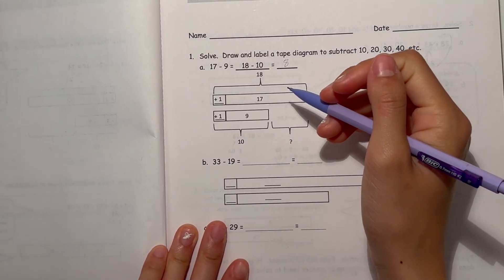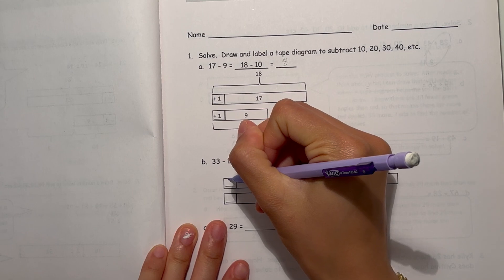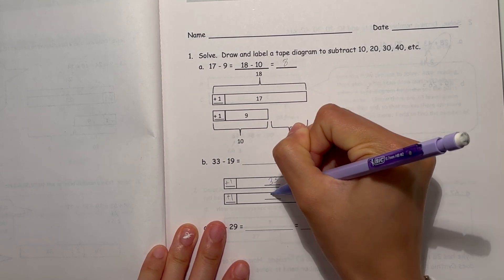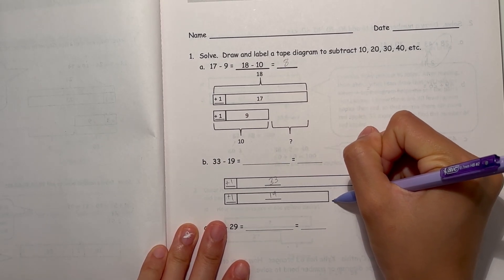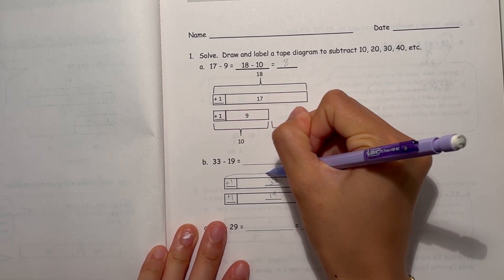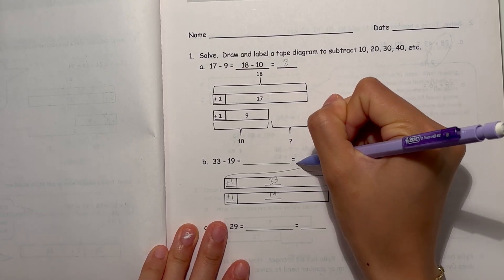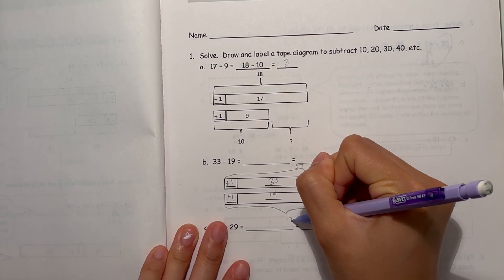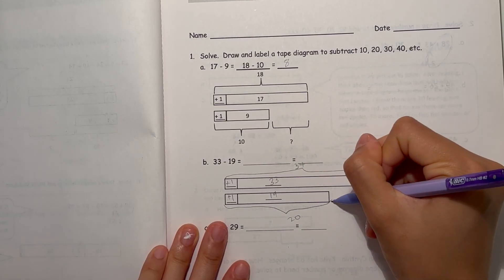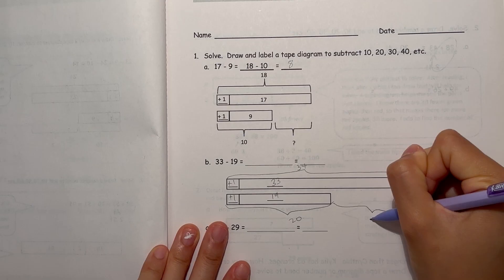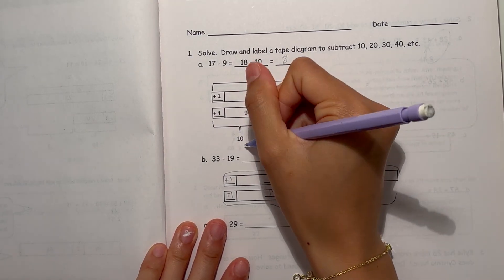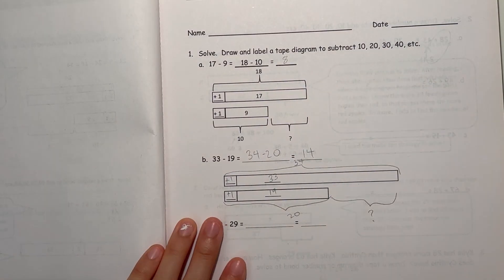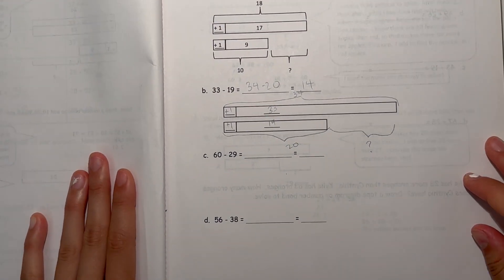So 33 minus 19, you're going to add 1 to both sides, so 33 and 19. So now this becomes 34 and 20. So you're trying to figure this out. What's the difference? So 34 minus 20, so that's just 14. So 14 is our answer. Okay, pretty simple.